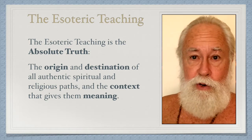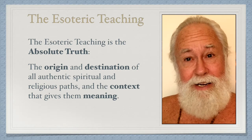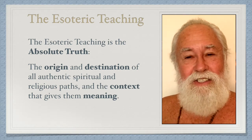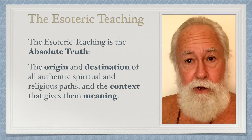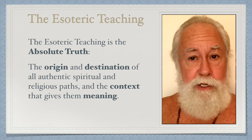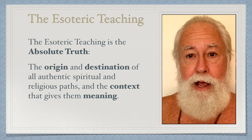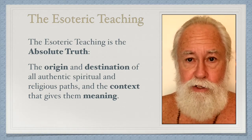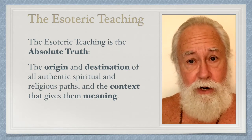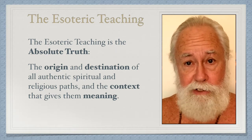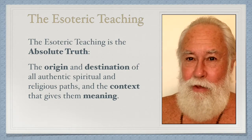Last time we went over the meaning of context and how context gives meaning to meaning. The esoteric teaching creates a universal context within which any spiritual or religious path acquires more meaning, greater significance, and hence greater value. By putting any spiritual method through the context of the esoteric teaching, we can better understand how it fits in the overall fall and return — the path.